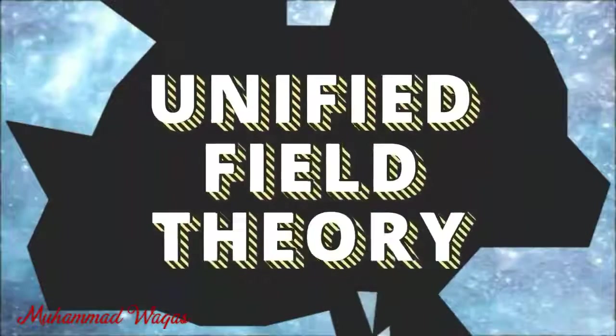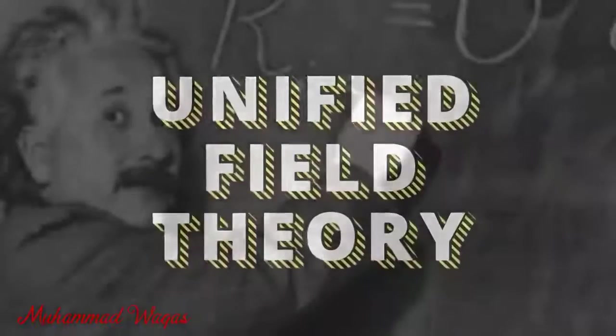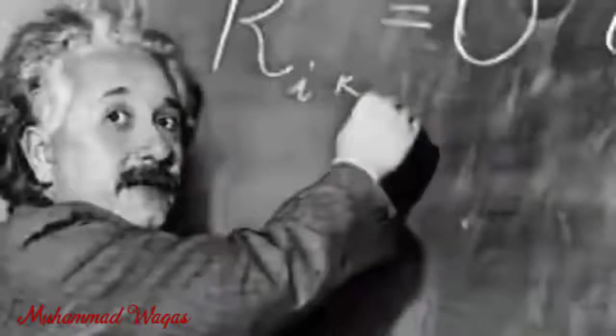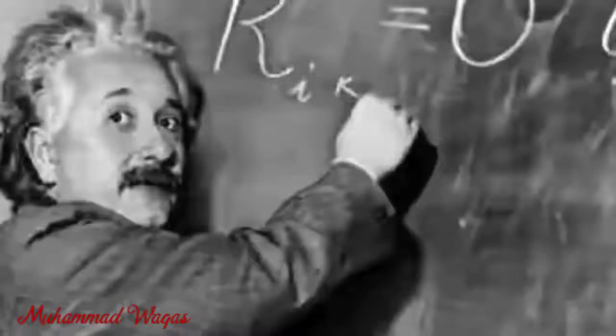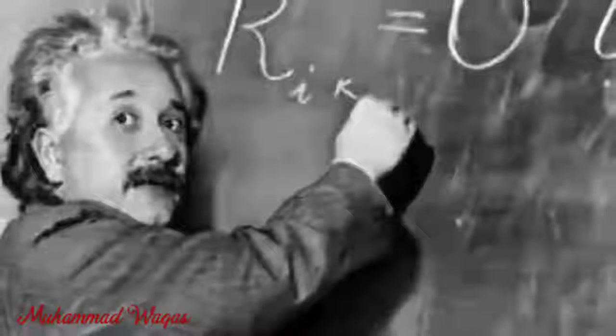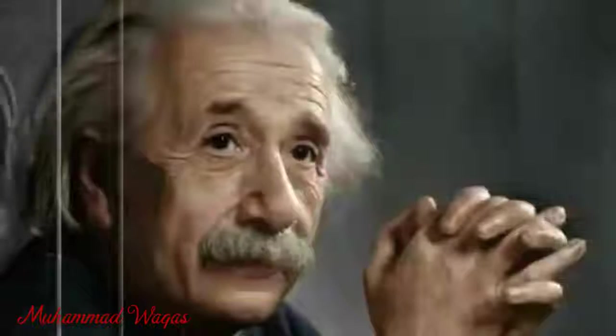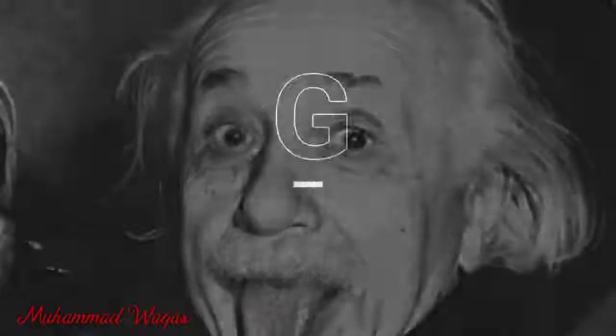The Unified Field Theory, named by Einstein. Albert Einstein wanted to prove that the two fundamental forces of the universe — the gravitational force and the electromagnetic force — are different manifestations of a single field.